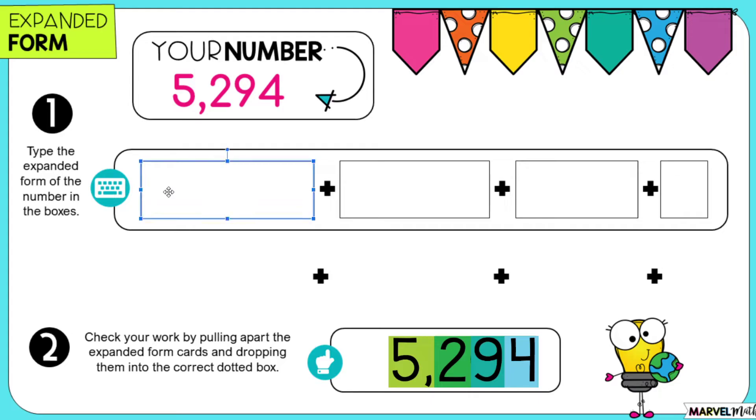So the first thing we're going to do is we're going to type that in down below. So to represent the value of the 5 in the 1,000th place, I will type 5,000.